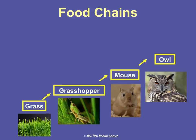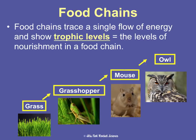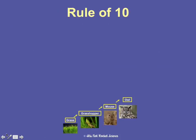Now we're going to talk about food chains, food webs, and trophic pyramids. A food chain shows a single flow of energy and also shows trophic levels, which are levels of nourishment. This food chain shows energy flowing from the grass to the grasshopper that eats it, to the mouse that eats the grasshopper, to the owl that eats the mouse. Arrows show where the energy is going — they're always going one direction. The grasshopper eats the grass; the grass does not eat the grasshopper.